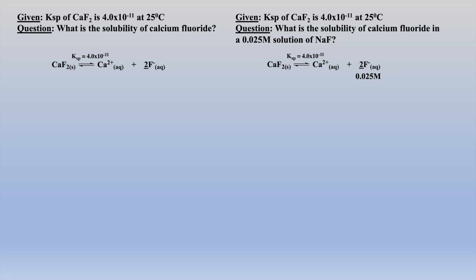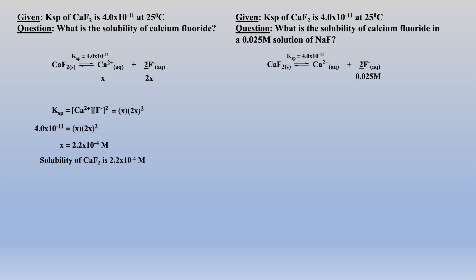Now let's examine how a common ion will affect solubilities. In the previously solved calcium fluoride example, we calculated solubilities in pure water given the Ksp. Let's compare that solubility to a solution that has 0.025 molar fluoride present. In pure water, we would write our change, place those values into the solubility expression, and solve for x. Here, x equals the solubility of calcium fluoride as well as the final concentration of the calcium ion, and twice this value is the equilibrium concentration of the fluoride ion.